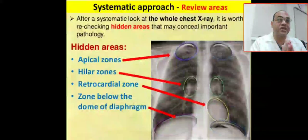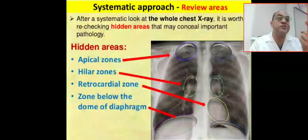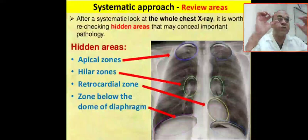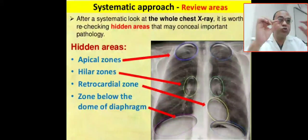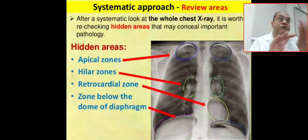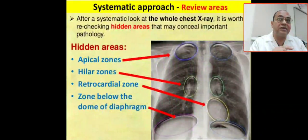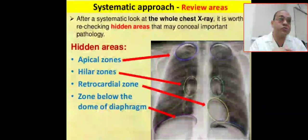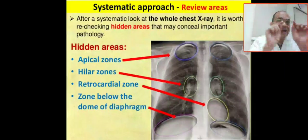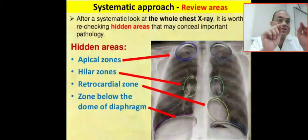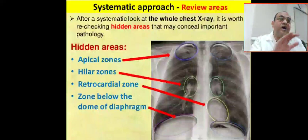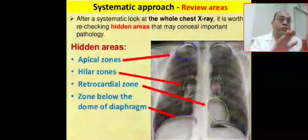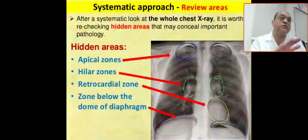There are four hidden areas in the X-ray. The first one is the apical zone, and it will be obscured by the clavicle. The clavicle will hide or obscure the underlying pathology, so you have to look for it. The second hidden area is the hilar zone — the area of the vascular or pulmonary vessels — where a lot of pathology can be obscured. You have to look for it.